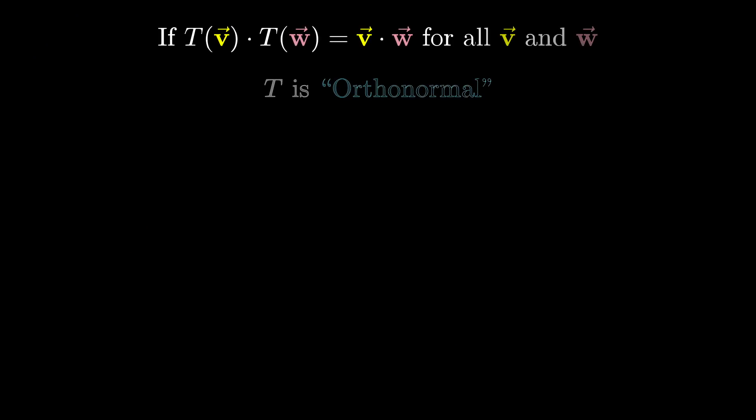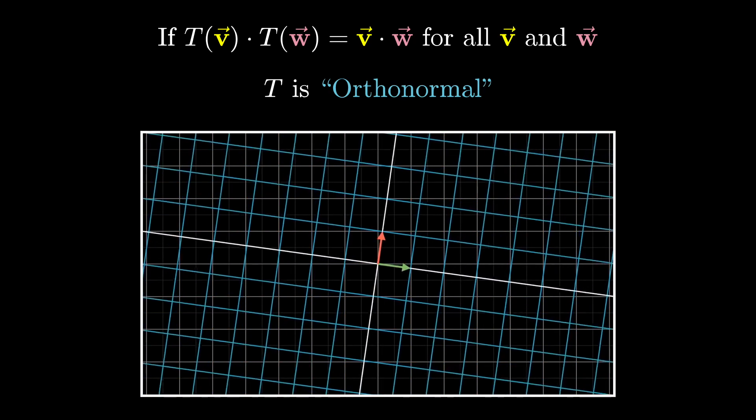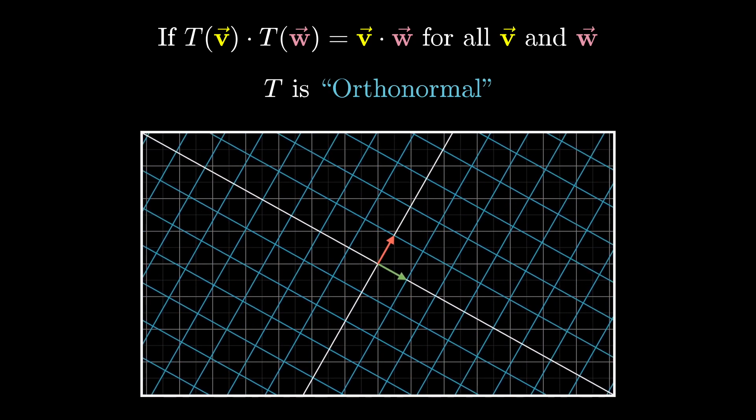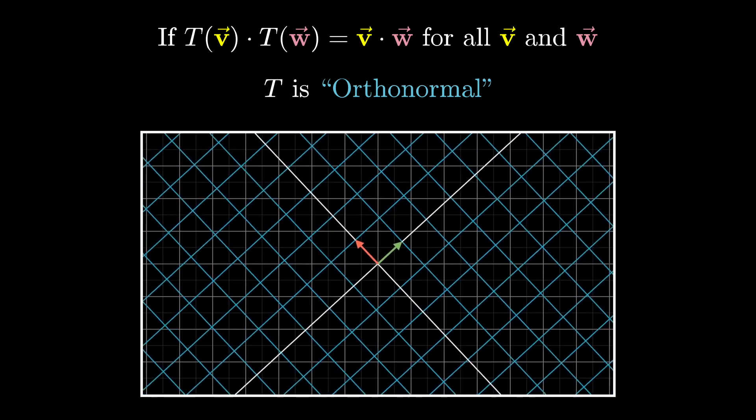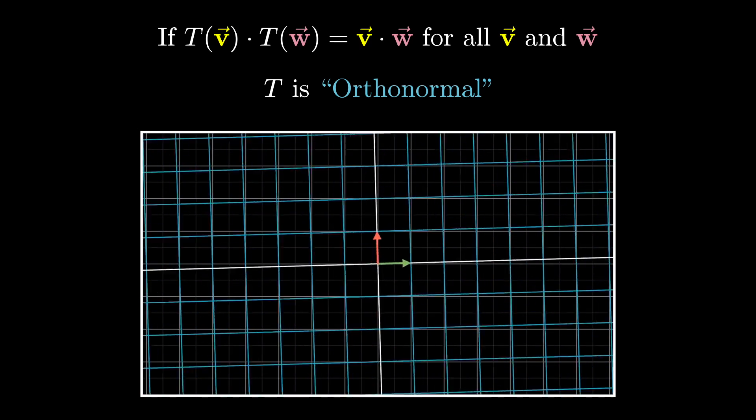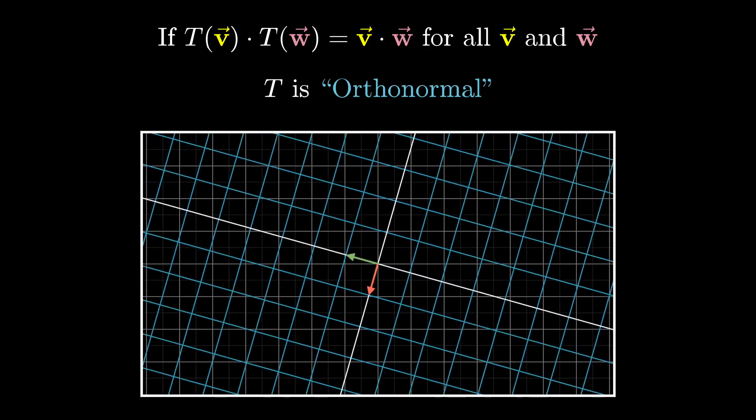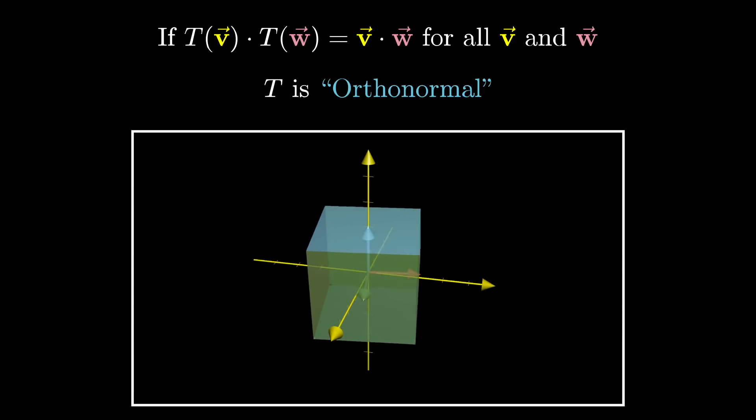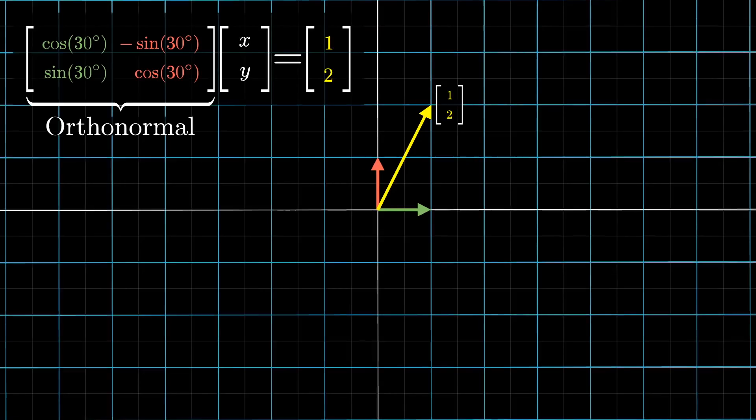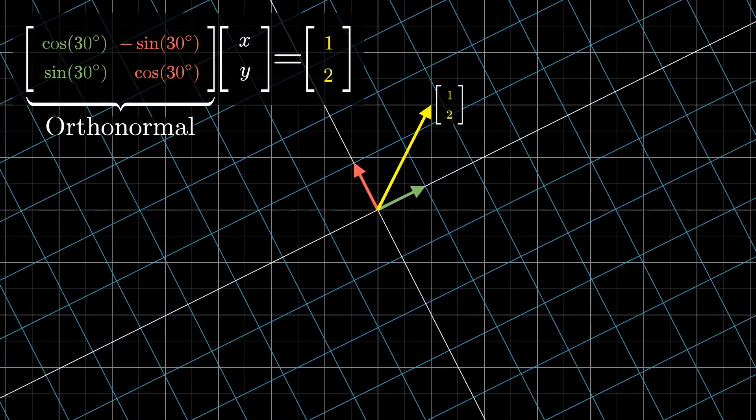In fact, worthwhile side note here, transformations which do preserve dot products are special enough to have their own name, orthonormal transformations. These are the ones that leave all of the basis vectors perpendicular to each other, and still with unit lengths. You often think of these as the rotation matrices. They correspond to rigid motion, with no stretching or squishing or morphing.